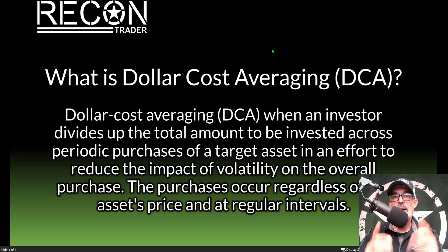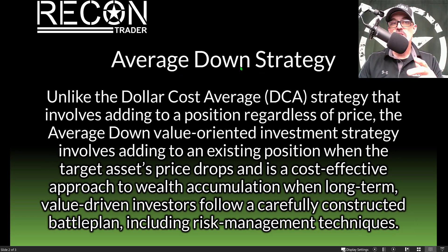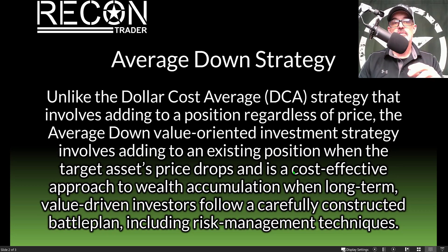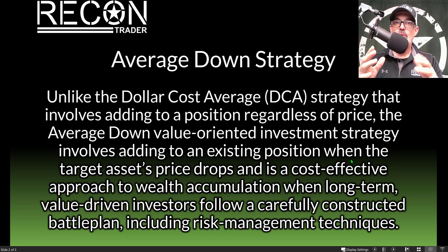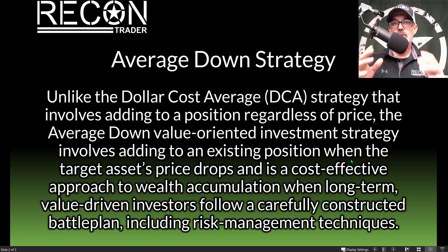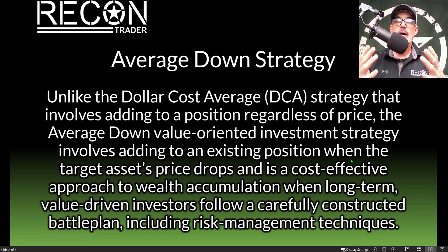With dollar cost averaging you buy whether the price is low or high — to me that is a bad strategy. The strategy I prefer is the average down strategy. Unlike dollar cost averaging, which adds to a position regardless of price, the average down strategy involves adding to an existing position when the target asset's price drops. It's a cost-effective approach to wealth accumulation when long-term value-driven investors follow a carefully constructed battle plan including risk management techniques.